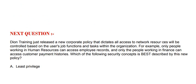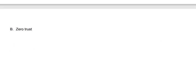Next question: Dion Training just released a new corporate policy that dictates all access to network resources will be controlled based on the user's job functions and tasks within the organization. For example, only people working in human resources can access employee records, and only people working in finance can access customer payment histories. Which of the following security concepts is best described by this new policy? Option A: least privilege. Option B: zero trust. Option C: acceptable use policy.